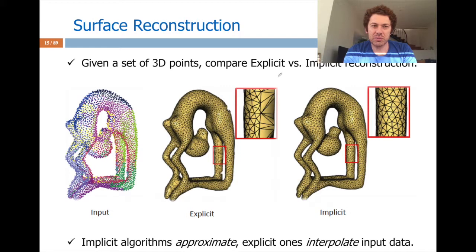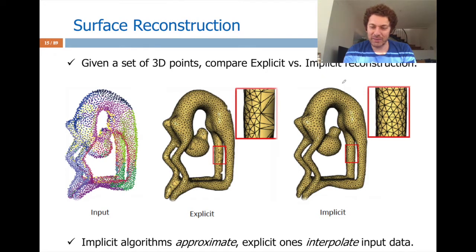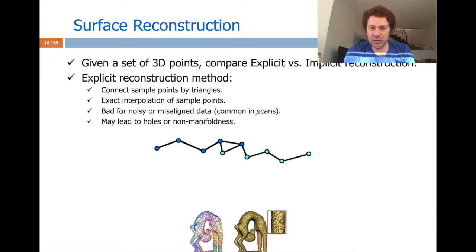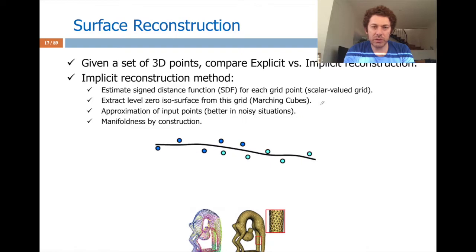Surface reconstruction: given an input point cloud, I can do explicit or implicit reconstruction. In explicit reconstruction I need to touch all the points and interpolate through them — pass through them. These points could be faulty because the source can be a scanner which isn't perfect. So explicit reconstruction will not be perfect if your input is not perfect. With implicit reconstruction you approximate the surface — you don't necessarily pass through the points — so it gives you a manifold without any weird junctions.